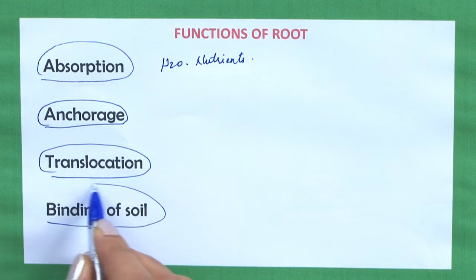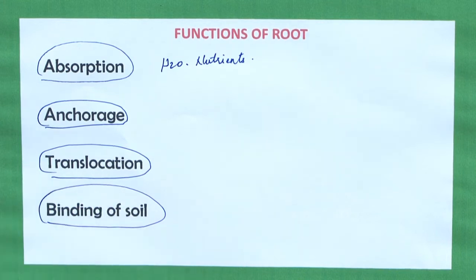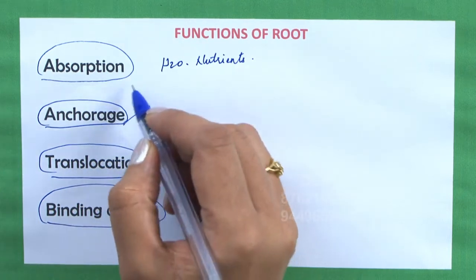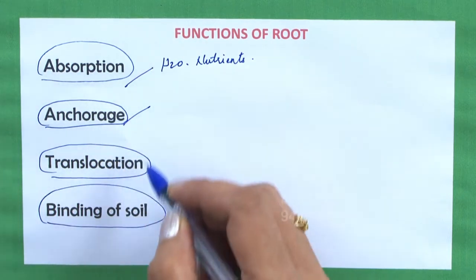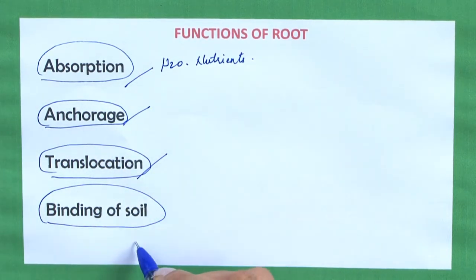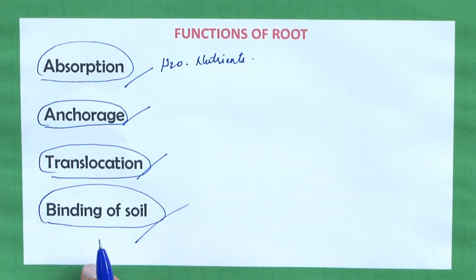Apart from this, roots also bind the soil materials and help in preventing soil erosion. So the main functions of roots are: anchorage, absorption, conduction or translocation, and binding of soil to prevent soil erosion.